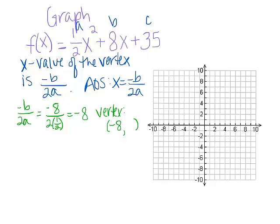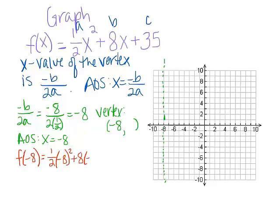We can put the axis of symmetry in at x equals negative 8. We know the vertex is on that line, but we need the y value. We have a function rule, so we're looking for f of negative 8 — we plug negative 8 in as our input. 1 half times negative 8 squared plus 8 times negative 8 plus 35. Half of 64 is 32, minus 64, plus 35. That gives us 3. So our vertex is at negative 8 comma 3.